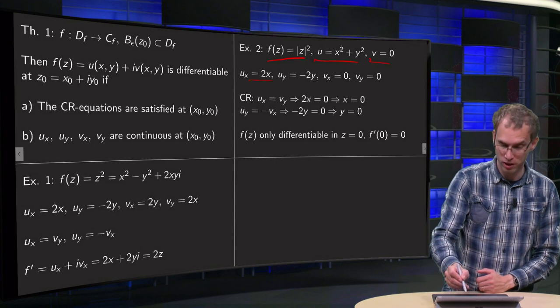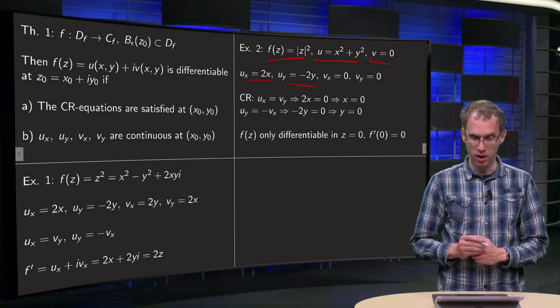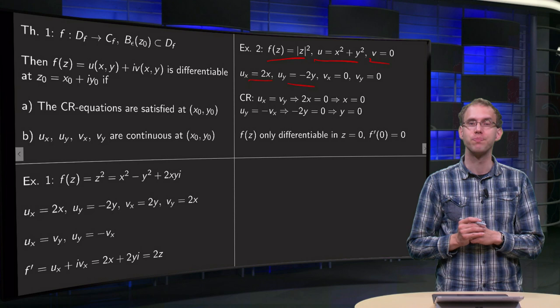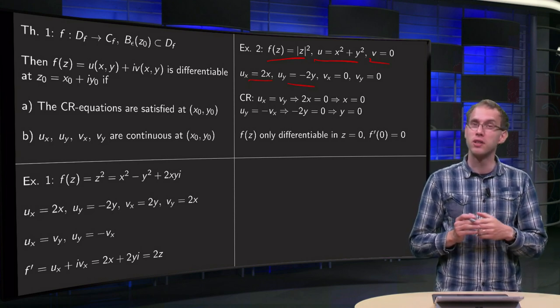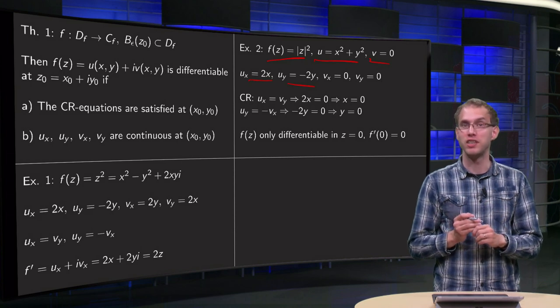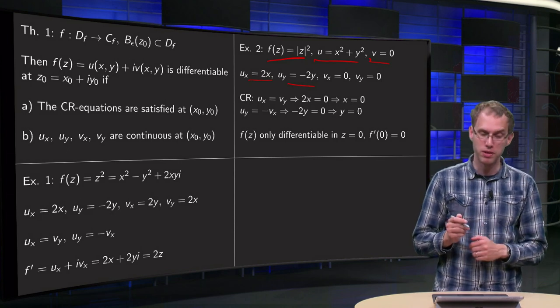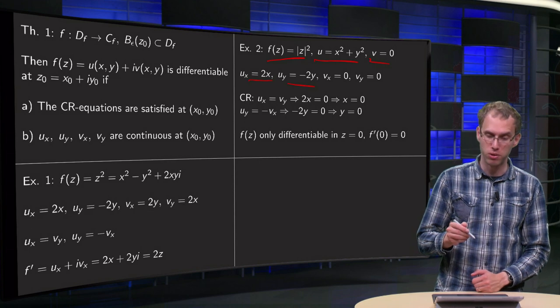Well, we have u equals x squared plus y squared and v equals 0. So ux equals 2x and uy equals 2y, and the derivatives of v are all 0. So continuity of ux and uy, etc., is no problem.